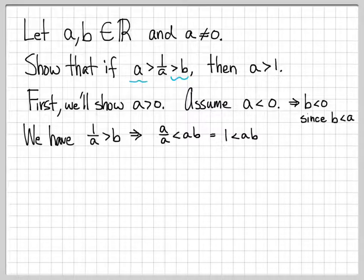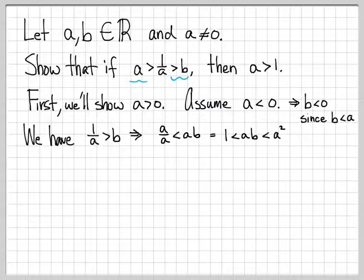Now, a and b are both negative numbers, so their product ab is positive, and 1 is less than that positive product. Since b is the smaller of the two numbers, we can make the product bigger by replacing b with a — going from ab to a², we only go up. So using our starting assumption 1 over a greater than b, we've shown that a squared has to be greater than 1. We'll box that and use it in a moment.